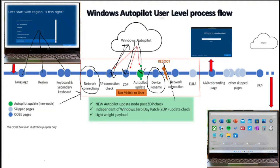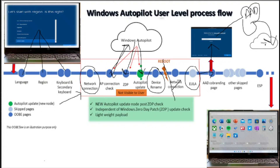Once the machine is back online, it again checks whether internet connectivity is there. If a license agreement is already configured in the deployment profile, the user will not see the EULA license agreement page and will land directly on the Azure Active Directory onboarding page, where they provide their username and password. The machine then joins Azure AD and enrolls in Intune. Once enrolled, the user moves to the enrollment status page where they can track all device-based and user-based deployments. Once this is done, the user can log into Windows using their Azure Active Directory username and password.